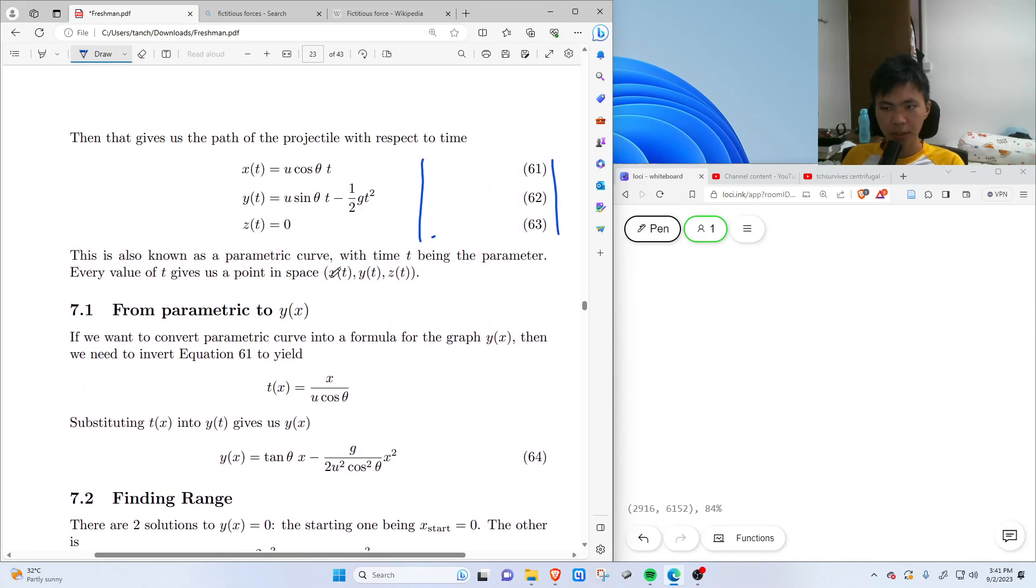Okay, so now, we're given X as a function of time and Y as a function of time. These are known as parametric curves. Specifically, T is the parameter, the parameter of this curve. So in the next video, I'll emphasize more on what this parametrization means and specifically, how we can reparametrize the curve using X instead. That's all for this video, see you in the next video. Thank you.